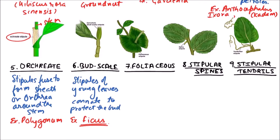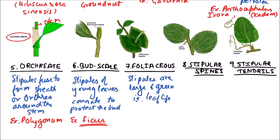Then Foliaceous stipules. These are leaf-like stipules. In this type, the stipules become enlarged and green, and they appear to be leaf-like. It can be clearly observed that there are two leaf-like stipules. Examples are members of the Pisum genus.